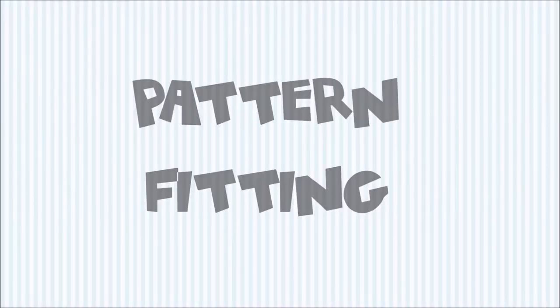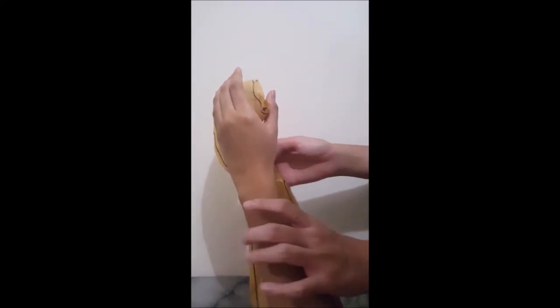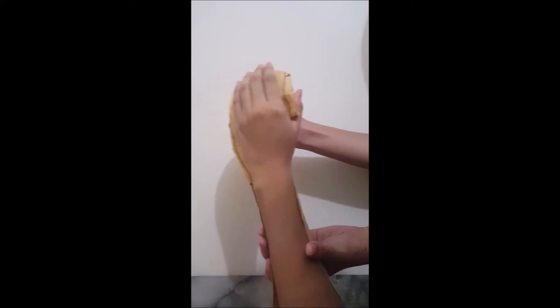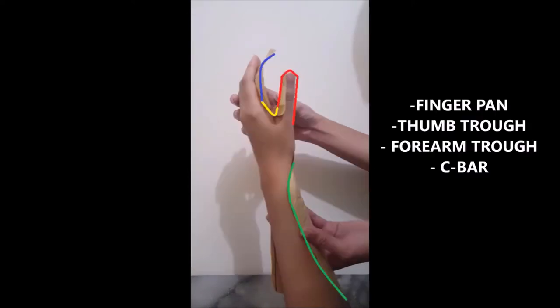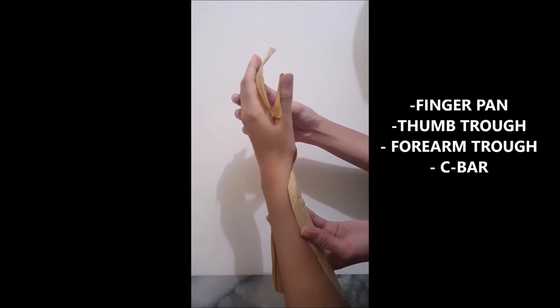Pattern fitting: Instruct the patient to rest the elbow on the table. The arm should be vertical and hand relaxed. You may also position the patient with forearm pronated or with forearm supinated. Cut out the pattern and fit it to the appropriate joint placement. Remember to check the four areas: the length of the finger pan, the thumb trough, the forearm trough, and the fit of the C bar. Make necessary adjustments on the pattern if needed.